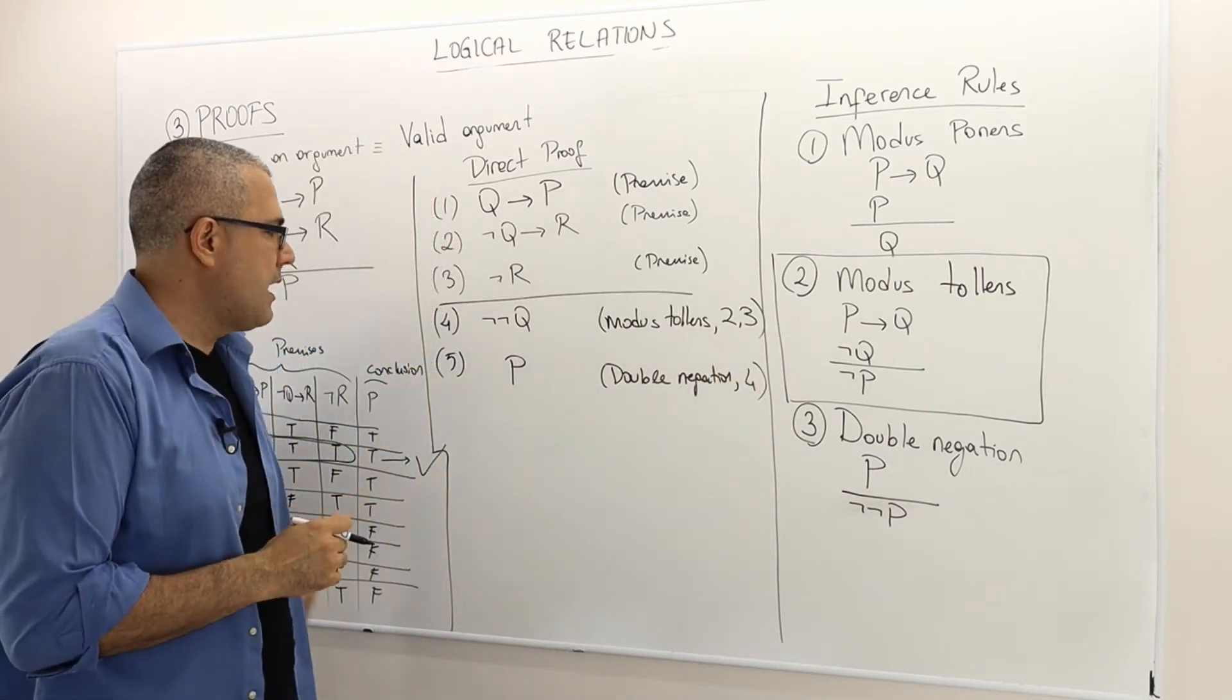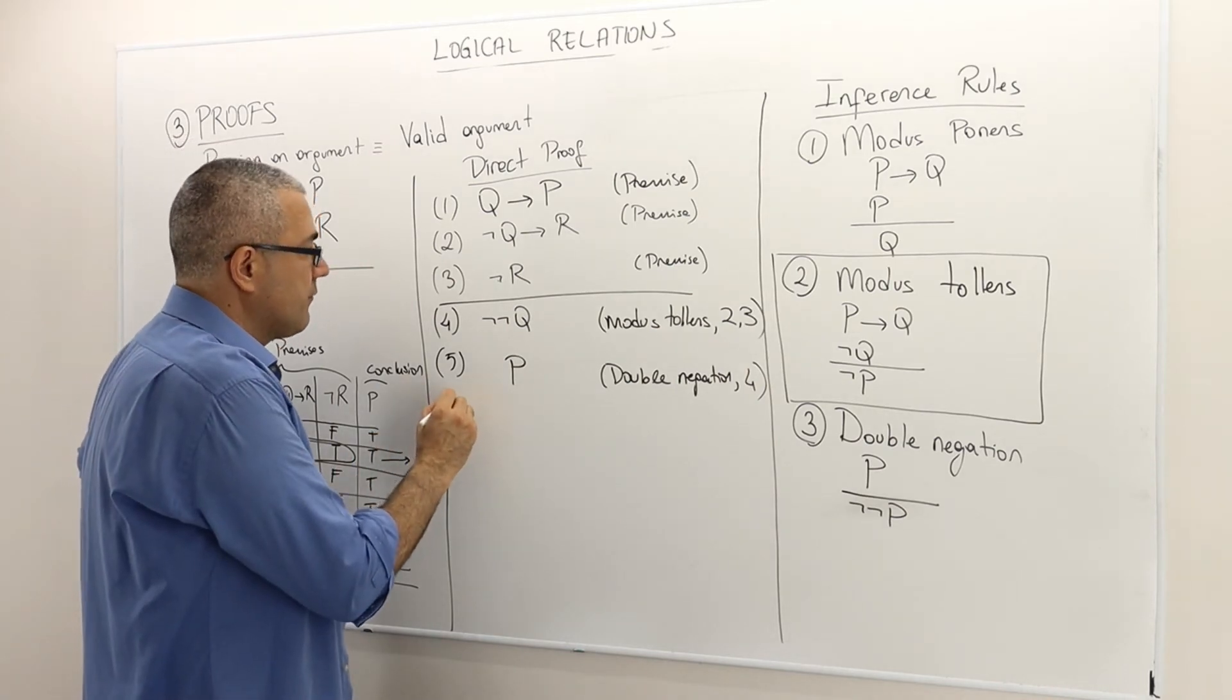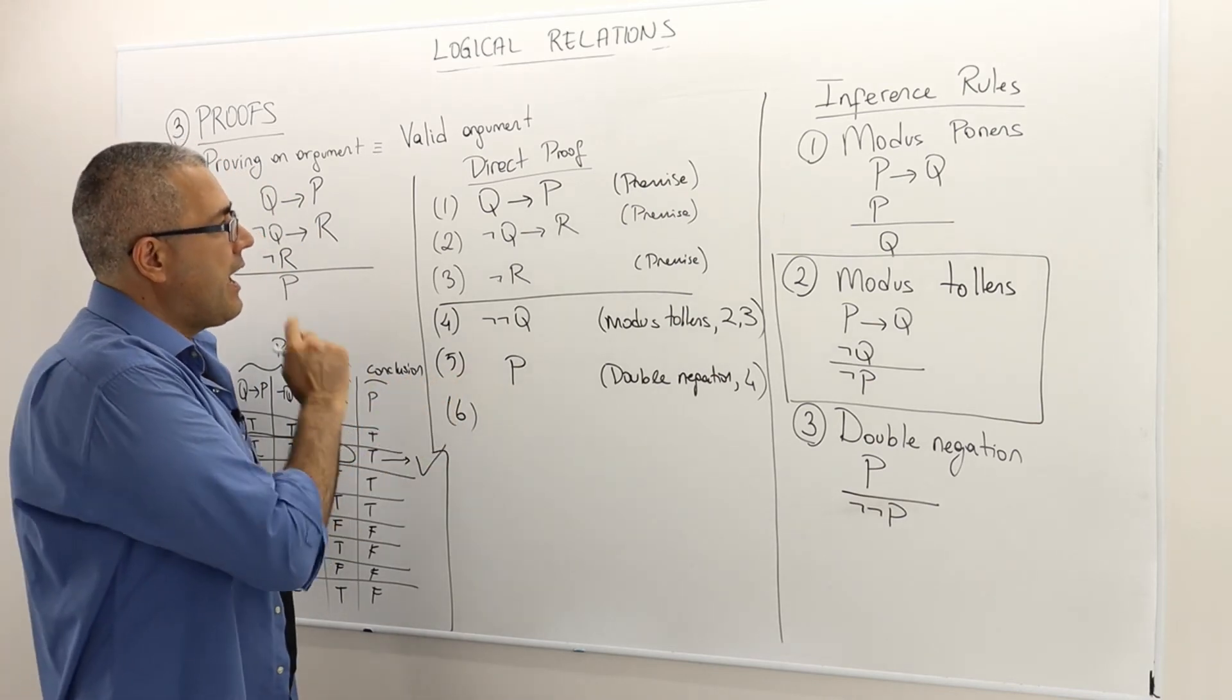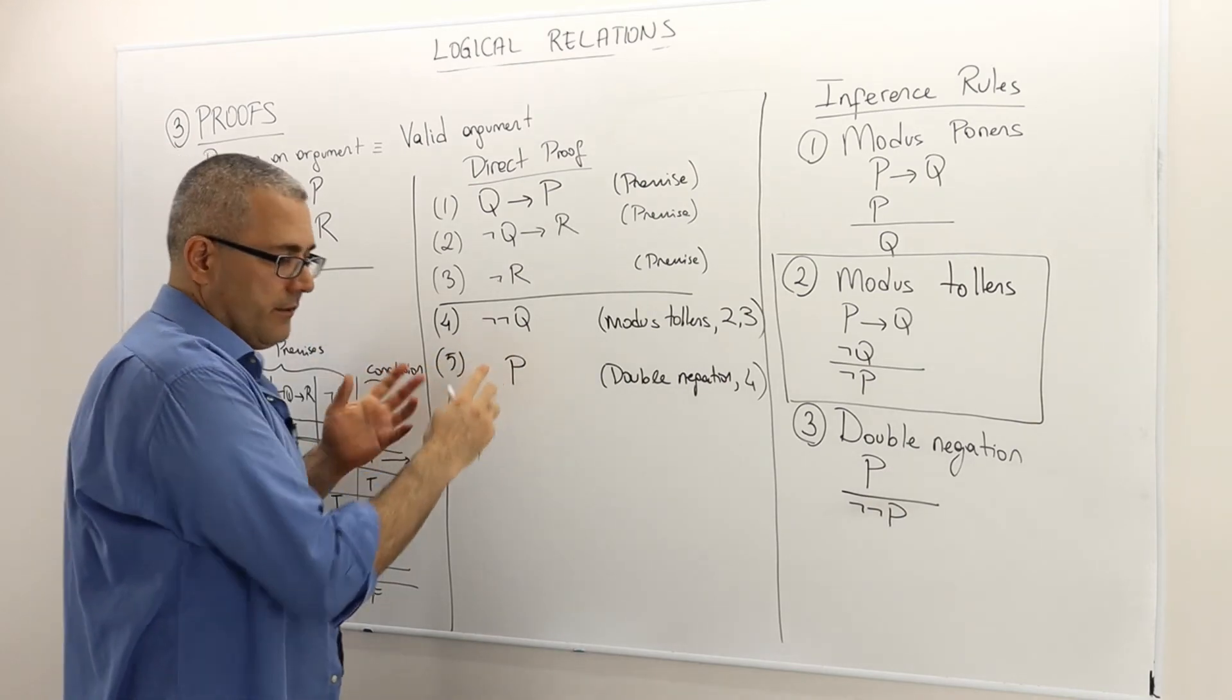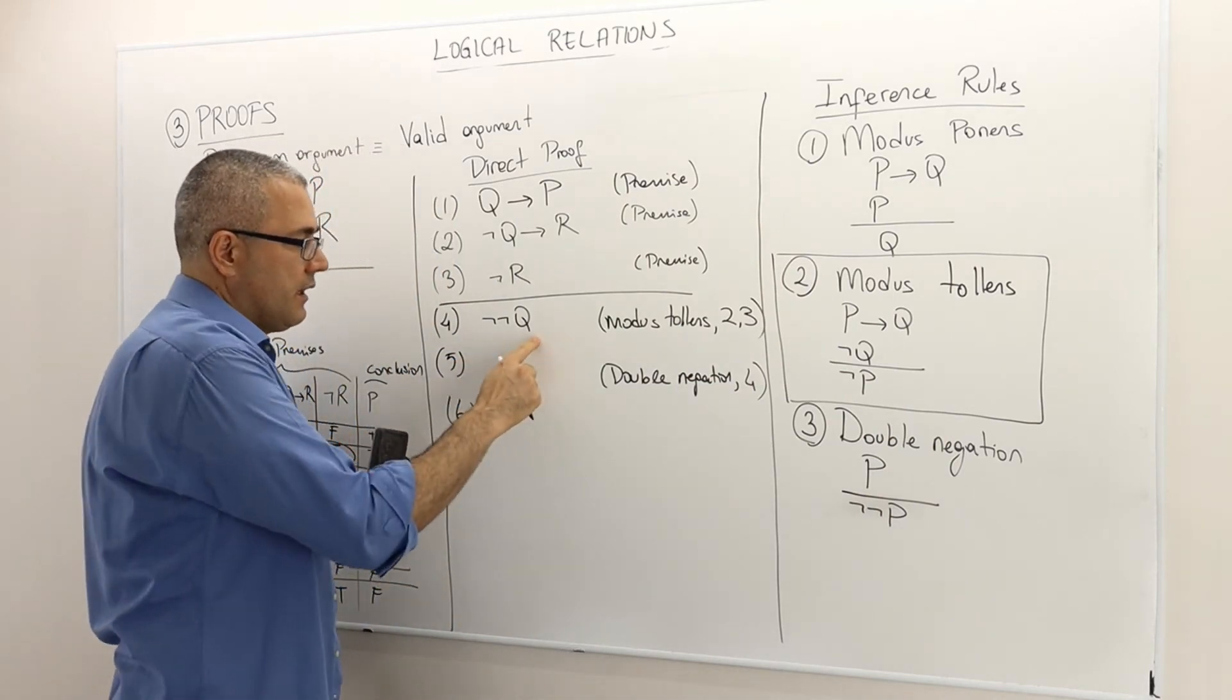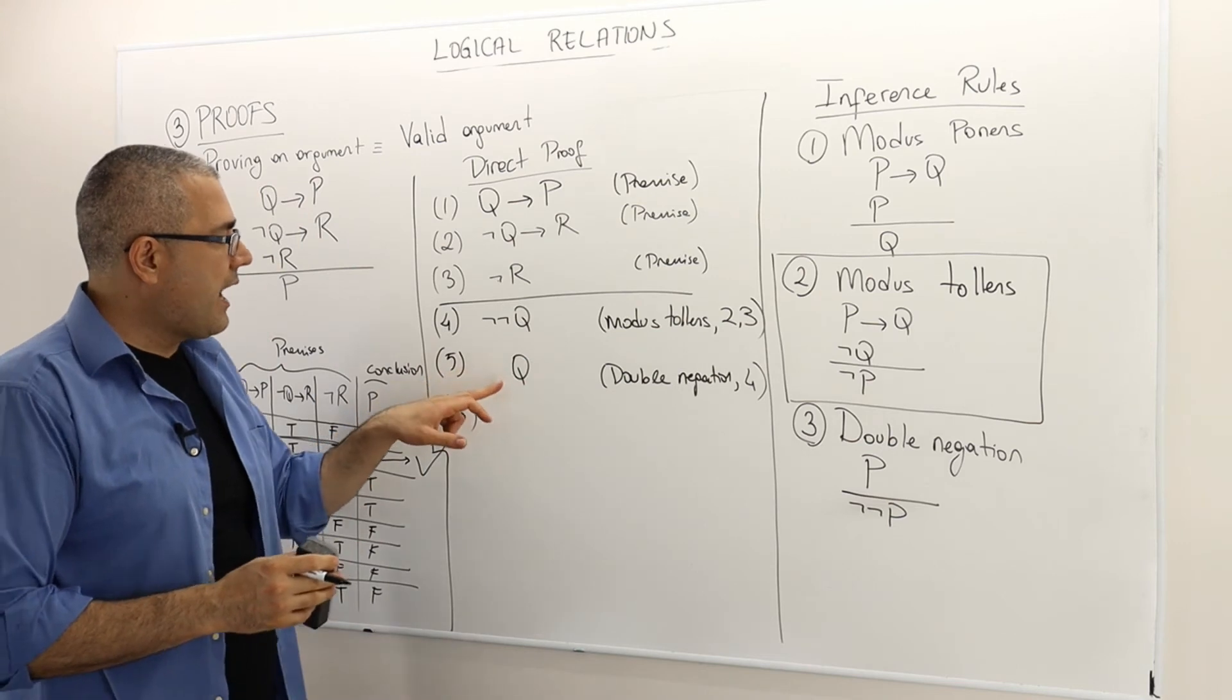And then finally... Oh, well, let's not say finally. So I have Q. I'm sorry. This is not P. That's my mistake. This is not not Q implies Q. I'm sorry. So I have Q.